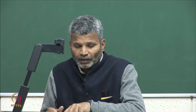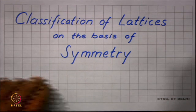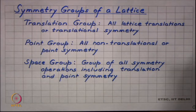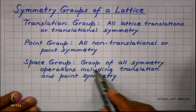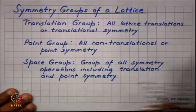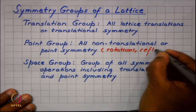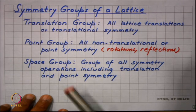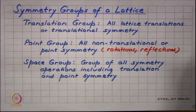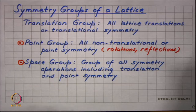We looked at the basic definition of symmetry in the last video and we now continue to use that definition for the classification of lattices. To recap: all lattice translations or translational symmetry form a group called the translational group; all non-translational or point symmetry like rotations and reflections form a group called the point group; and finally, the group of all symmetry operations including translational and point symmetry is called the space group. Lattices are classified on the basis of the point group and the space group.